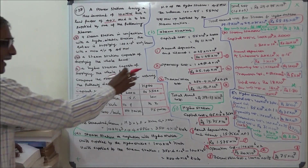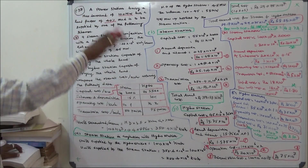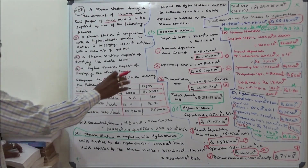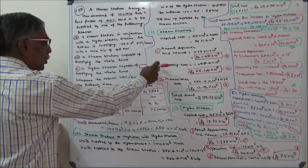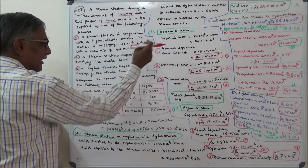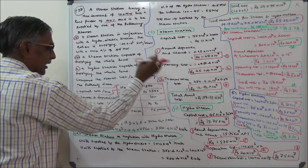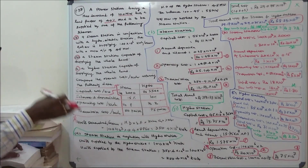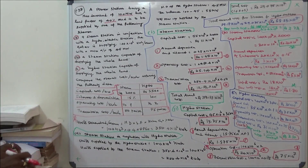Total annual cost for the steam station is annual interest and depreciation plus operating cost plus transmission cost: 1.65 plus 25.004 plus 12.52 equals rupees 39.17 crores.